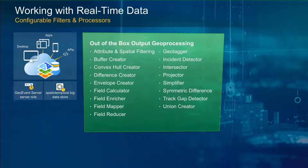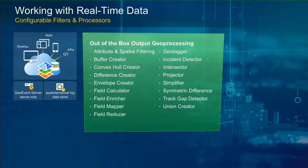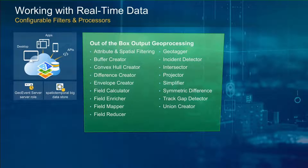We have processors dedicated to enhancing geometry — like the Buffer Creator where you have a point or polygon and want to create a buffer of a given unit. We also have more advanced processors such as the Difference Creator, where you have a defined service area and every time someone performs an inspection through that area, it removes parts of that polygon, so at the end of the day you can see which areas didn't get inspected. We can also change the projection of data on the fly and do field calculations to convert units.